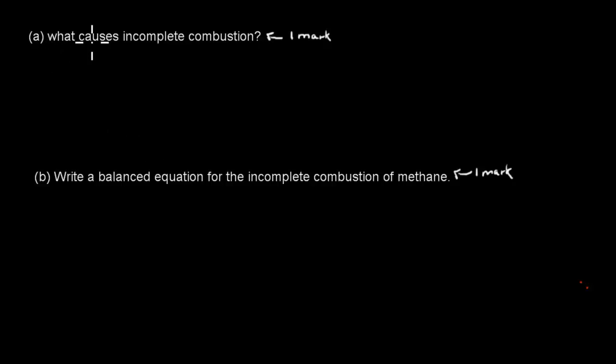Part A is what causes incomplete combustion, and that's worth one mark. And B is write a balanced equation for the incomplete combustion of methane. That's also worth one mark. So pause the video now. I'll be quiet in five seconds so you can pause and try to attempt that question. Press play when you're ready.